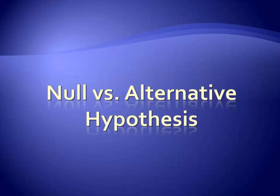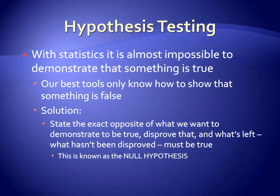Let's begin by differentiating between the two main types of hypotheses that we'll use in hypothesis testing. The majority of statistical tests that are run are referred to as null hypothesis significance testing. With null hypothesis significance testing, we are able to determine the probability that a relationship exists between two or more variables by first establishing that a null relationship does not exist between those variables.